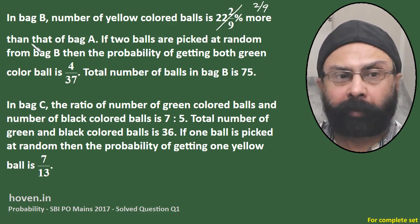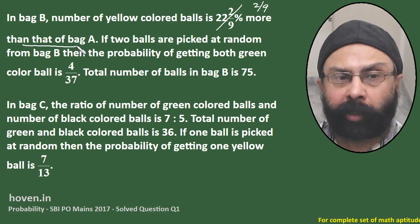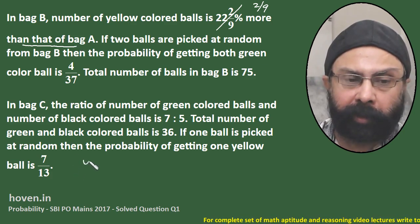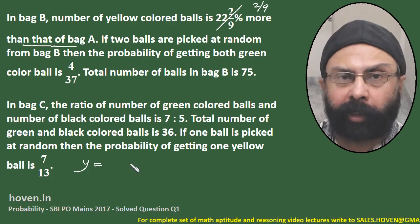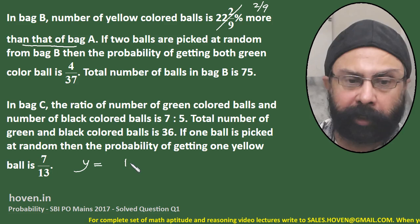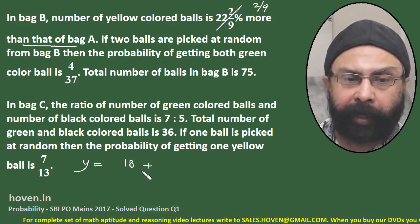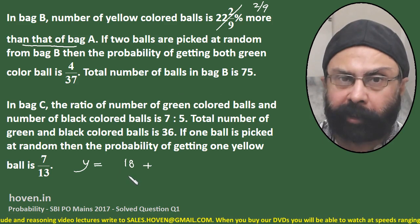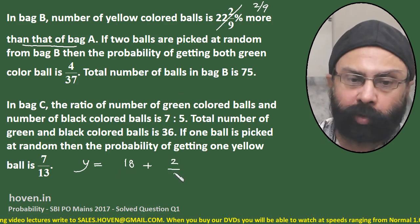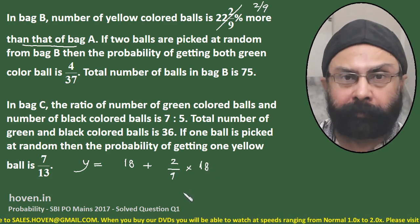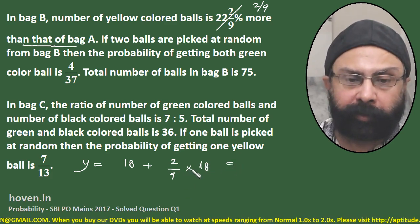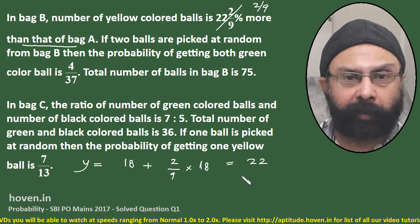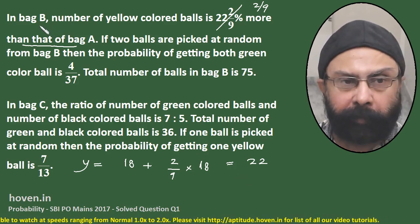The yellow colored balls in bag B = yellow in bag A + 2/9 of that value. Bag A had 18 yellow balls. Adding 2/9 of 18 = 4, we get 18 + 4 = 22. So the number of yellow balls in bag B is 22.